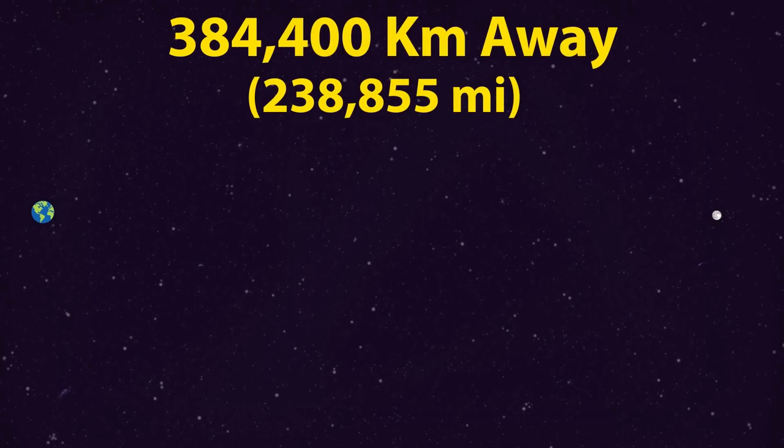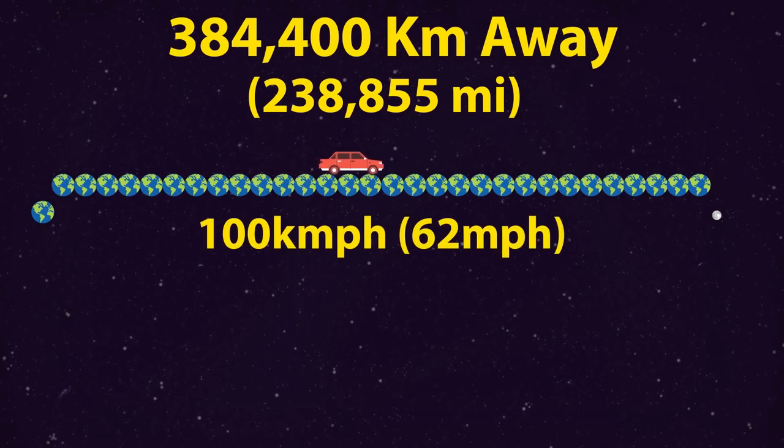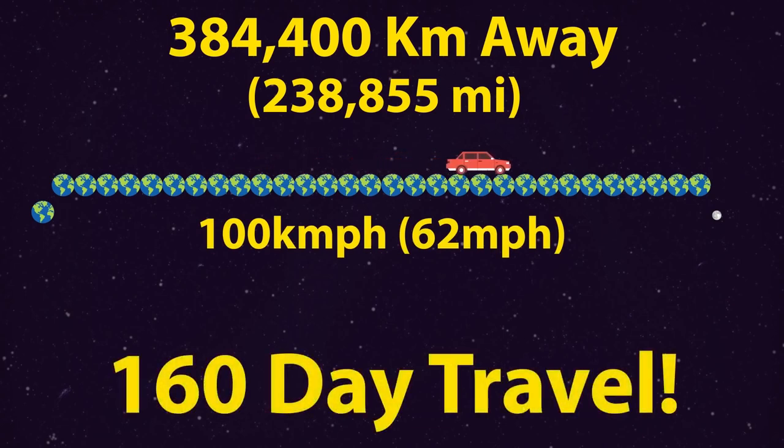384,400 kilometers away from you right now on average. You could fit 30 entire Earths in between this distance, and if you somehow were able to drive a car at a constant 100 kilometers per hour speed, it would take you about 160 days to drive the entire distance.